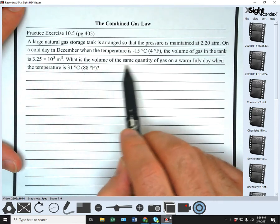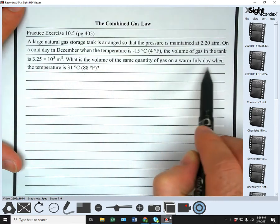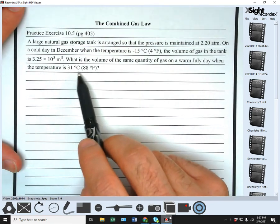What is the volume of the same quantity of gas on a warm July day when the temperature is 31 degrees Celsius, 88 degrees Fahrenheit?